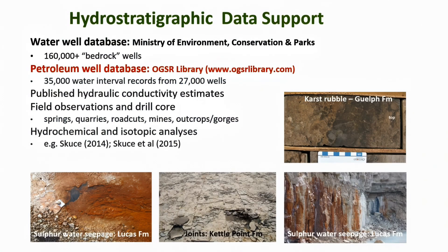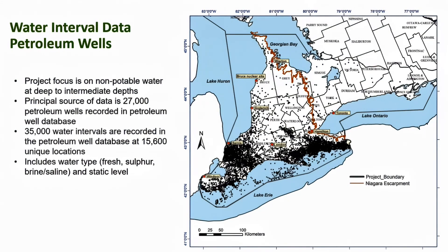Development of a hydrostratigraphic model is supported by a variety of data: the water well database of the Ministry of Environment, Conservation and Parks, with 160,000 wells that penetrate bedrock; the petroleum well database, which is again a principal source of data; compiled published hydraulic conductivity estimates; field observations and drill core; and chemical and isotopic analysis. There are records for 27,000 petroleum wells in Southern Ontario, of which 15,600 wells have 35,000 water interval records in the Ontario Petroleum Data System.